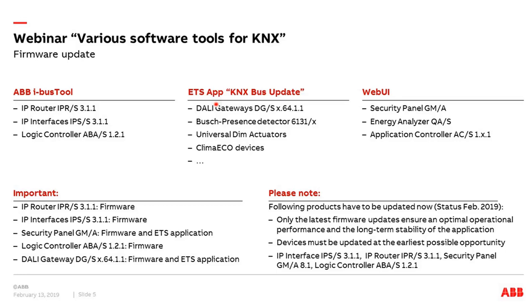The current situation as of February 2019 is that we have an important update available for four products: the IP router IP RS 3.1.1, IP interface IP SS 3.1.1, security panel GMA, and the logic controller ABA S121. There is an important firmware update necessary to ensure optimal operational performance and long-term stability. It's really a must to update these devices as early as possible.